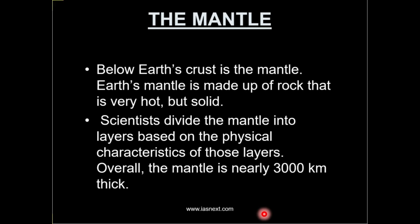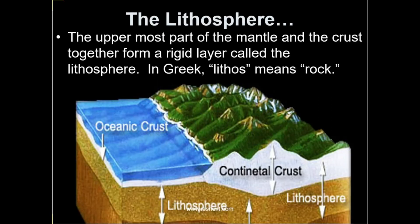In the crust, the major elements are silica and aluminium, so we know the crust as SIAL. Similarly, in the mantle the major elements are silicon and magnesium, so it is also known as SIMA. The uppermost solid part of the mantle and the lower part of the crust together constitute the lithosphere — a rigid layer where all natural activities take place.